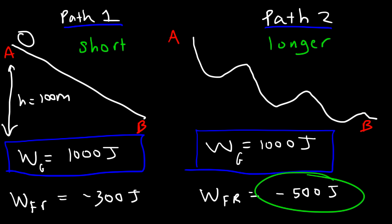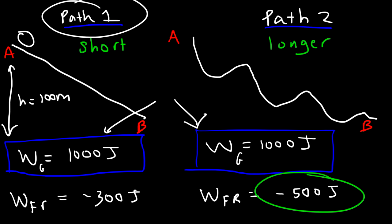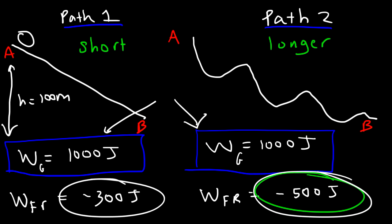To summarize: gravity is a conservative force because the work done by gravity does not depend on the path — it's path independent, and the same for both paths. Friction is a non-conservative force because the work done by friction depends on the path. The work is different for the different paths — it's greater for path 2 because path 2 is longer than path 1.